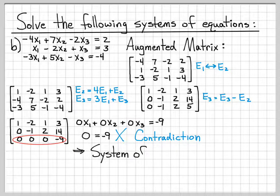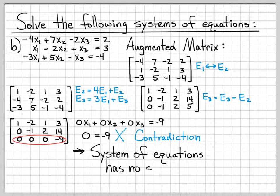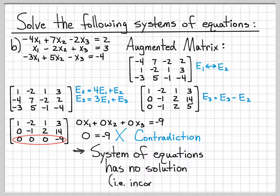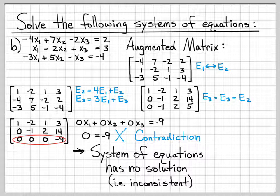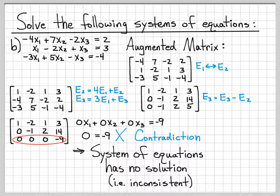What that means is that this system of equations does not have a solution. It has no solution. Another way of saying that is that this system of equations is inconsistent. In the first example we looked at that was very similar to this, we ended up with a single unique solution. We found an x1, x2, and x3 that satisfied the provided system of equations. In this part, in part b, we've looked at a very similar system of equations.